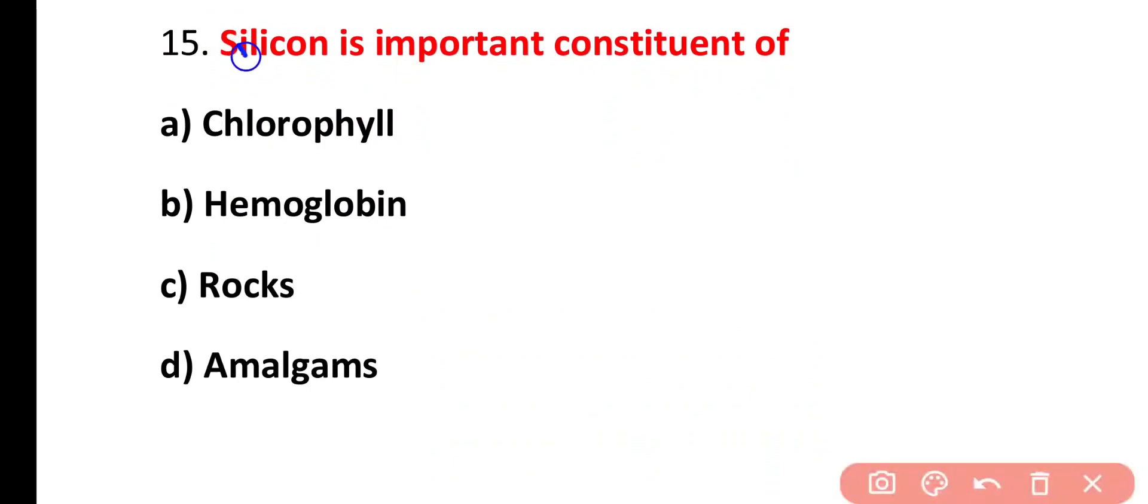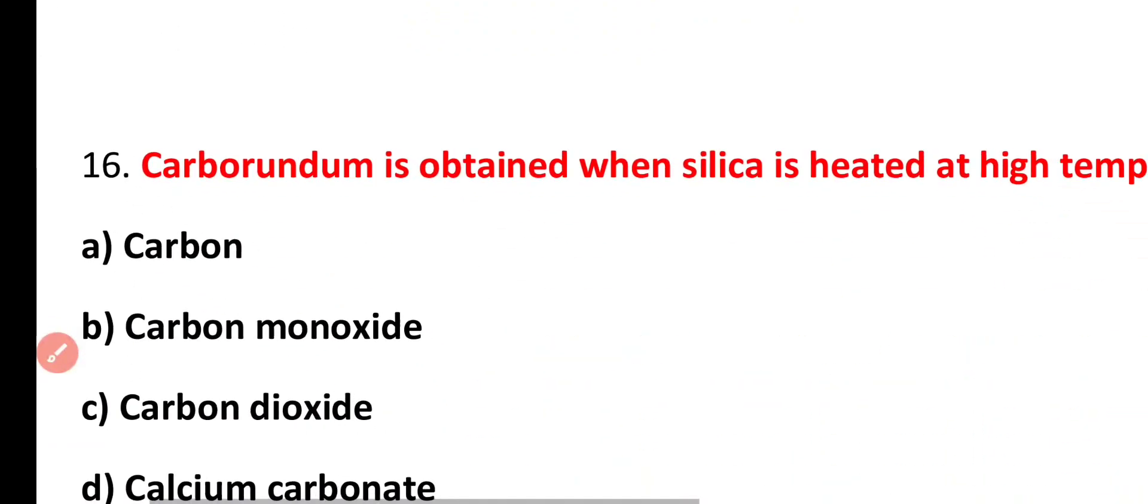Question number 15. Silicon is an important constituent of chlorophyll, hemoglobin, rocks, amalgam. Correct answer is option C. Silicon is an important constituent of rocks.